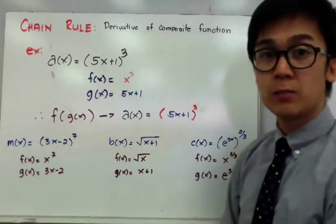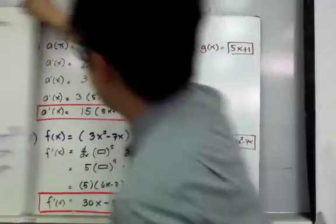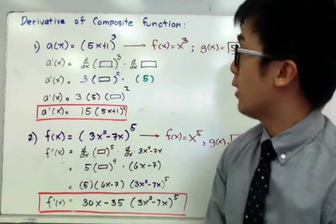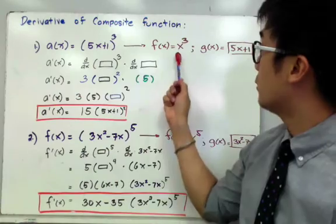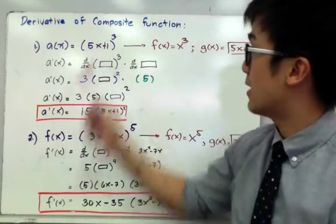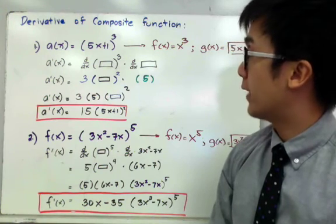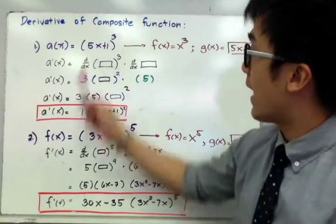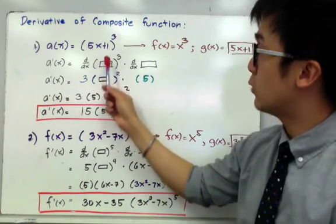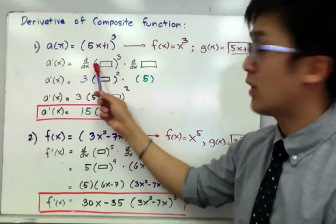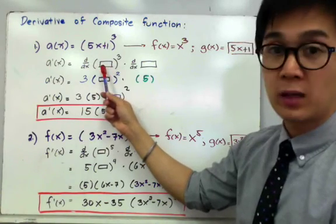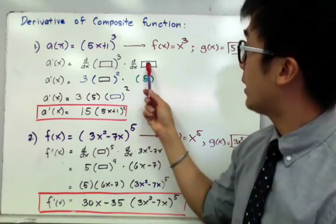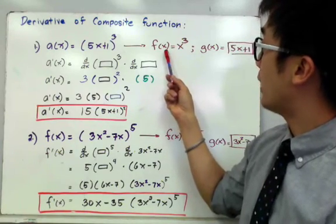Now let's use the chain rule to find the derivative of some composite functions. Starting with a(x) = (5x+1)³, we know f(x) = x³ and g(x) = 5x+1. To find the derivative, we find the derivative of f(x) times the derivative of g(x) — that is, the derivative of the parenthesis cubed times the derivative of the inside. The derivative of f(x) = x³ is 3x².